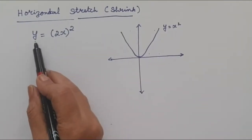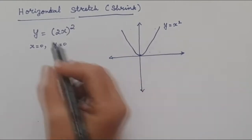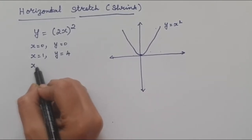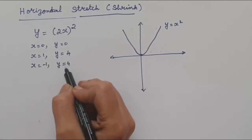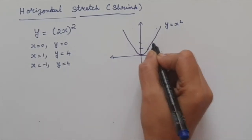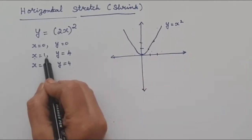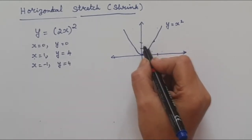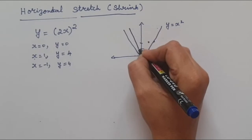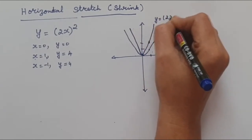Now let us see how to draw the graph of y = 2x². When x = 0, y = 0, so this point remains the same. When x = 1, y = 4; when x = -1, y = 4. For y = x², at x = 1, y = 1, and at x = 2, y = 4. But for y = 2x², at x = 1, y = 4. So when we draw the graph, our graph shrinks horizontally — that is y = 2x².